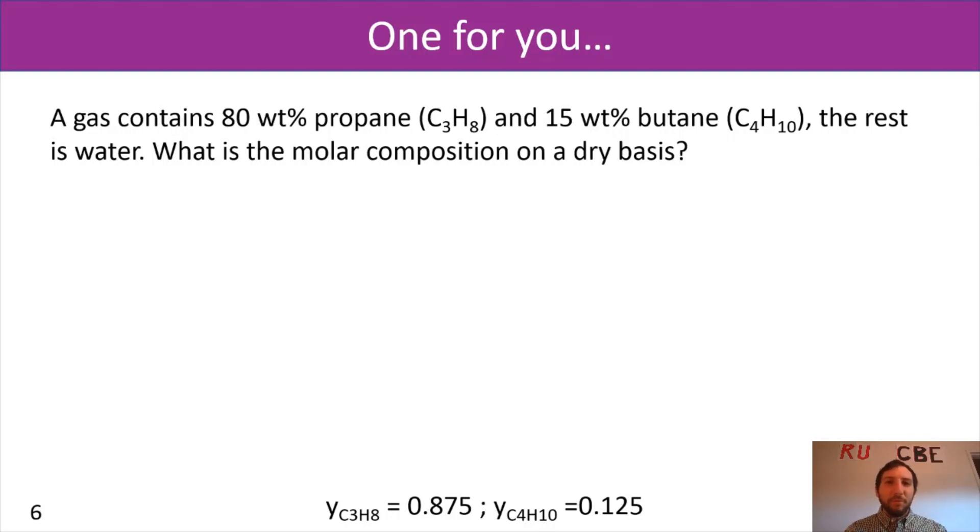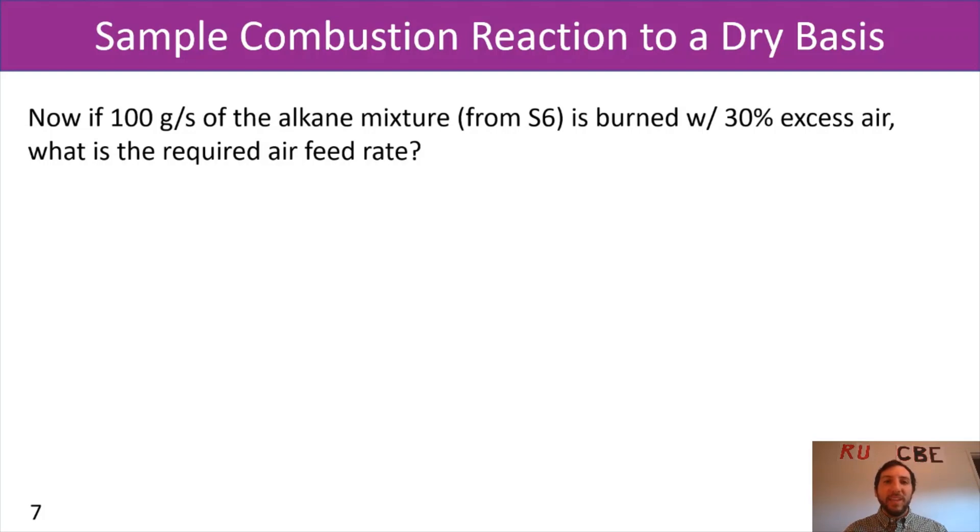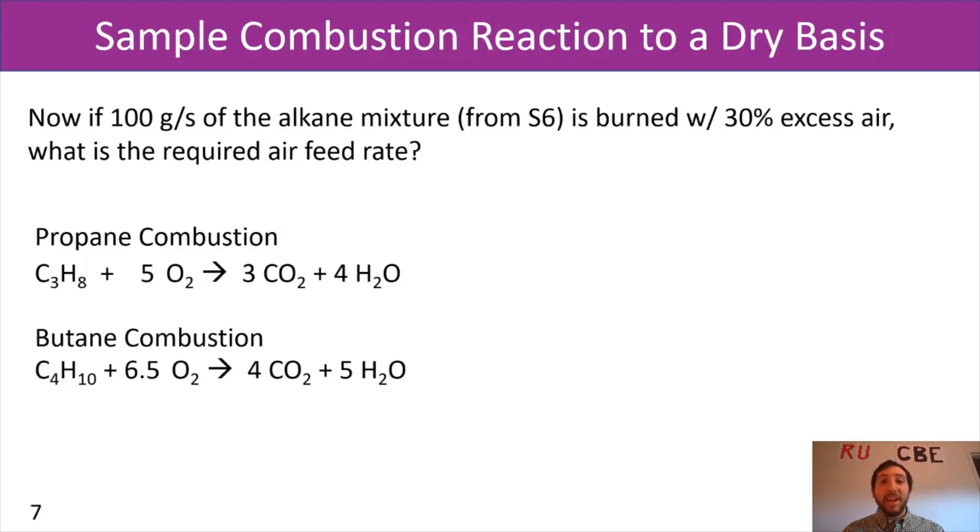Now building off of this example problem that you're going to be working on, I have another piece that follows up on this, where I now have 100 grams per second of that alkane mixture of propane and butane that I'm going to burn. And that's going to be with 30% excess air. And I want to know what is the required air feed rate. And pay attention. That's air feed rate, not oxygen feed rate, air feed rate. Now for this, for these reactions, I've got propane combustion going on where I have propane reacting with oxygen to form carbon dioxide and water. And similarly, I have butane combustion where I have butane reacting with oxygen to form carbon dioxide and water. As you might recognize, this is a parallel reaction because I have oxygen being used for two reactions simultaneously. Just want to remind you about those parallel reactions because they're coming back.